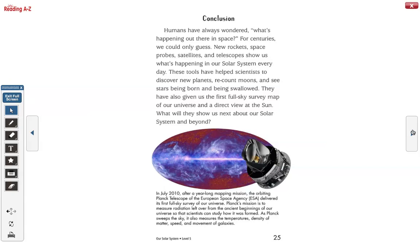In July 2010, after a year-long mapping mission, the orbiting Planck Telescope of the European Space Agency delivered its first full sky survey of our universe. Planck's mission is to measure radiation left over from the ancient beginnings of our universe so that scientists can study how it was formed. As Planck sweeps the sky, it also measures the temperatures, density of matter, speed, and movement of galaxies.